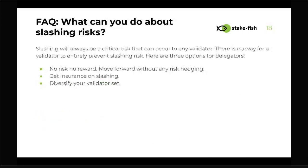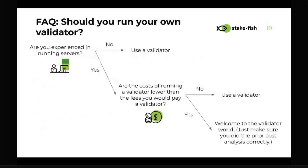Another frequently asked question: what can stakers do about slashing risk? In my opinion there are three main options. One: recognize there's no reward without risk — just accept it and move forward. Two: get insurance on slashing, but there are no live solutions for this just yet. Three — the recommended approach: diversify your validator set so that if any one validator gets slashed, you only lose a portion of your total staked tokens.